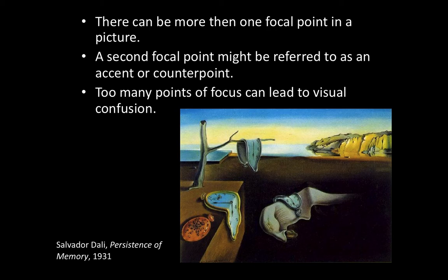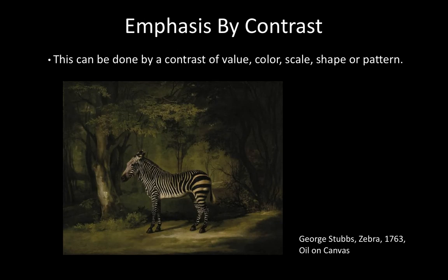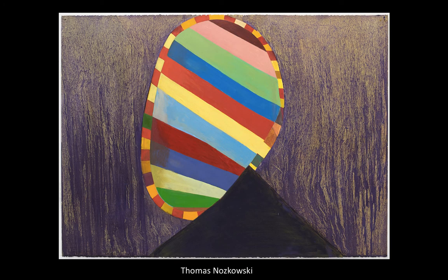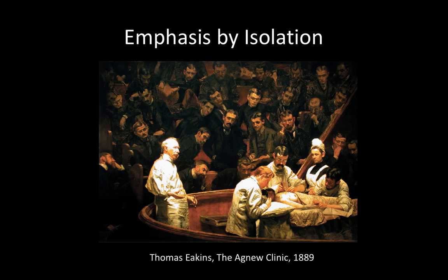Emphasis by contrast is a good way to create emphasis — just having something that's very different from its surroundings. It could be value, color, scale, shape, or pattern. In this image, the zebra has a very different pattern than the texture of the background, and that creates a lot of emphasis — we know right away we're meant to look at the zebra. Here's an abstract image, and right away we know that the oval egg shape in the center is what we should be looking at, not just because it's centered but also because it's so different from the background.